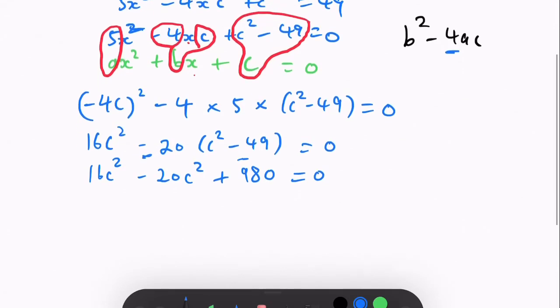And then what you do here now is that you combine like terms, you get minus 4c squared plus 980 equals 0,